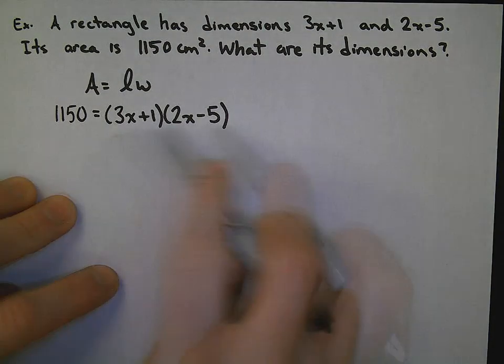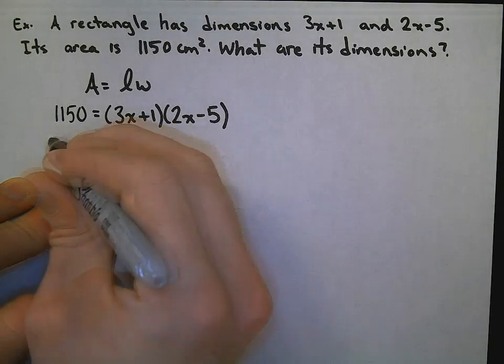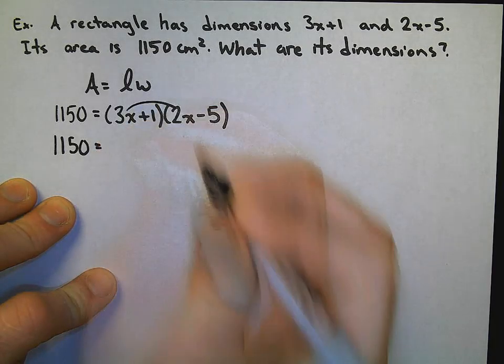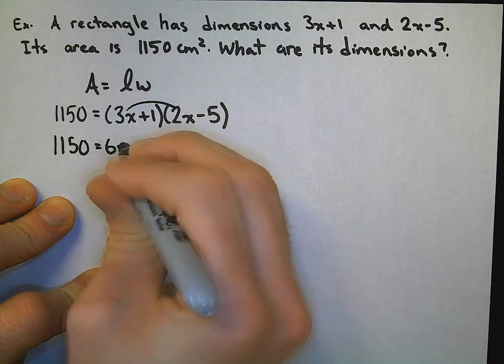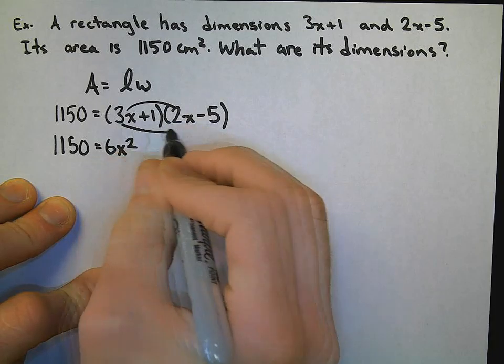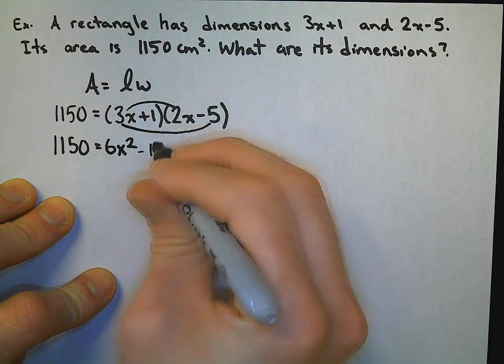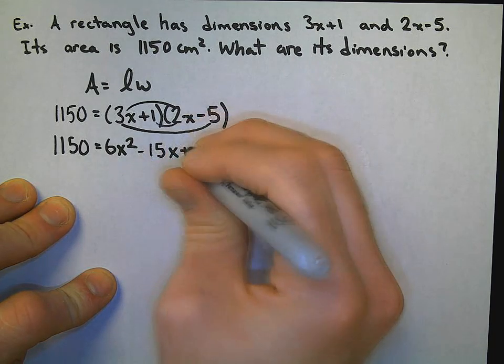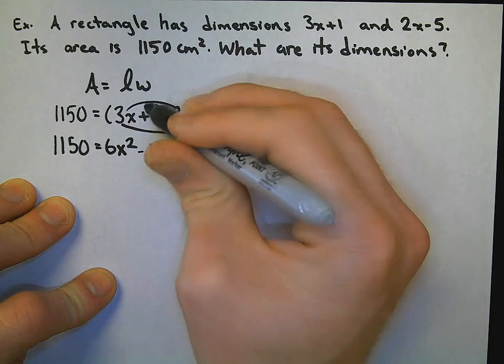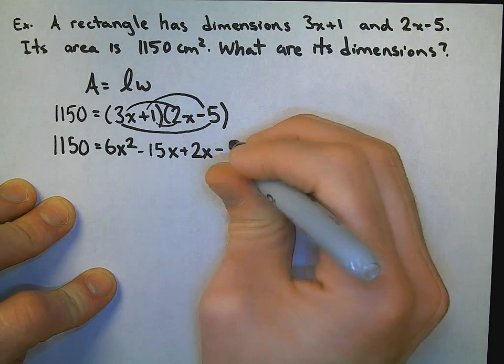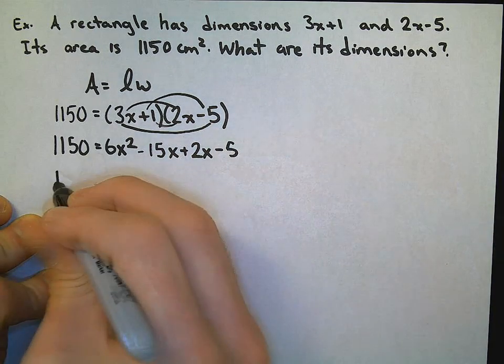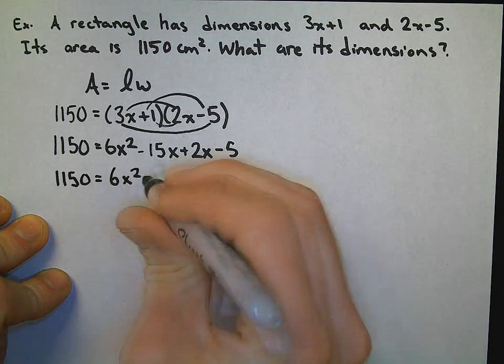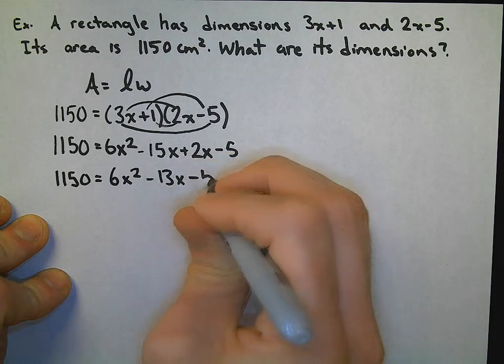We must expand these brackets using FOIL. 1,150 equals... remember, 3x times 2x is 6x². 3x times negative 5 is negative 15x. Inside terms, 1 and 2x is plus 2x. And the last terms, 1 multiplied with negative 5 is minus 5. So we have 1,150 = 6x² - 13x - 5.